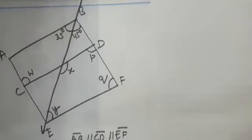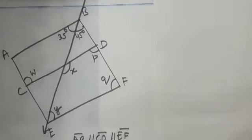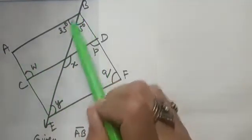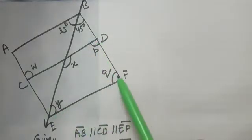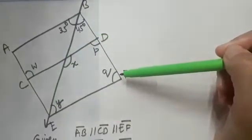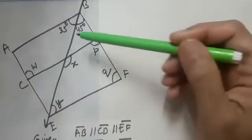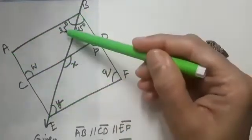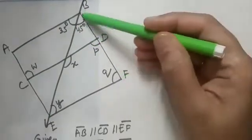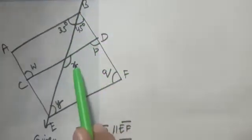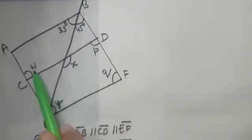Let us solve another interesting question from the chapter parallel lines. Here it's a very interesting figure. In this question it is given that AB is parallel to CD is parallel to EF. Also it is given that AE is parallel to BF and some angles are also marked. Angle ABE is 35 degrees and angle FBE is 45 degrees, and we need to find out the values of X, P, Q, Y and W.